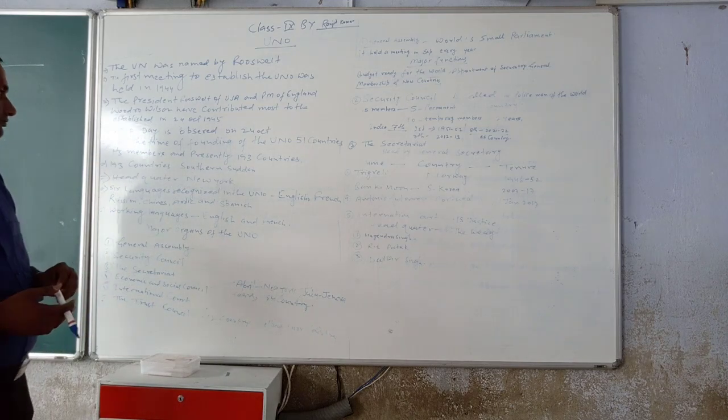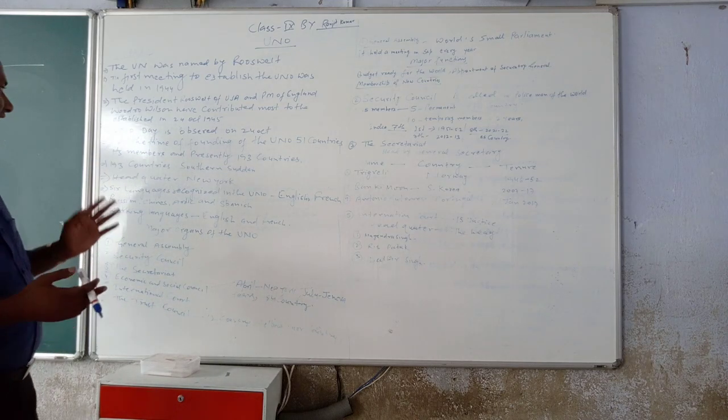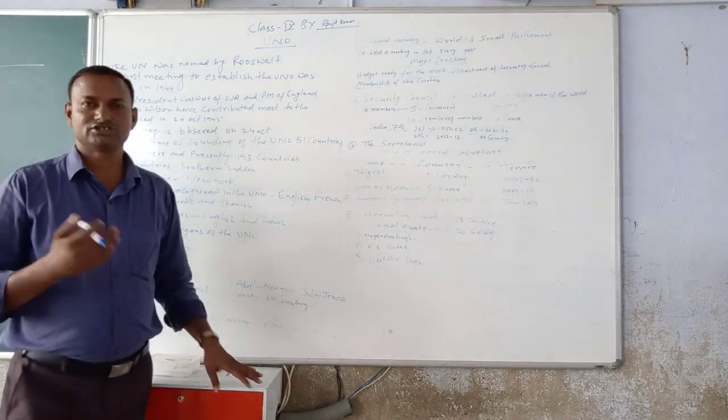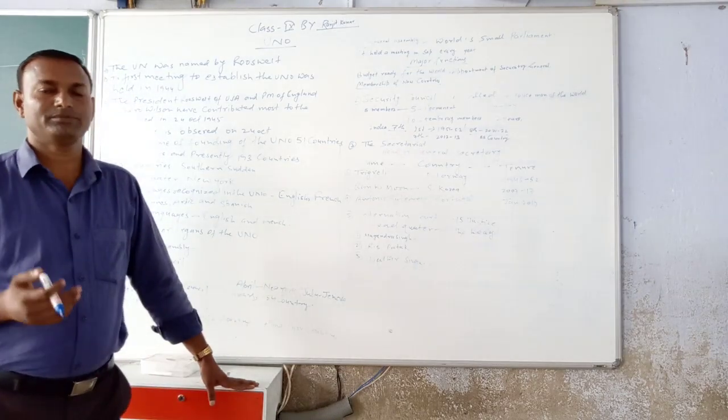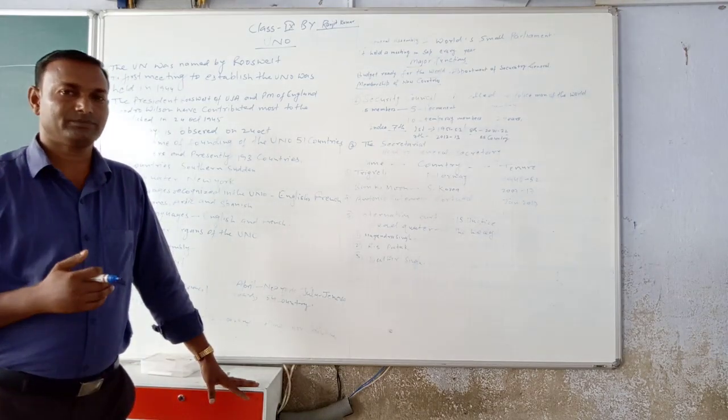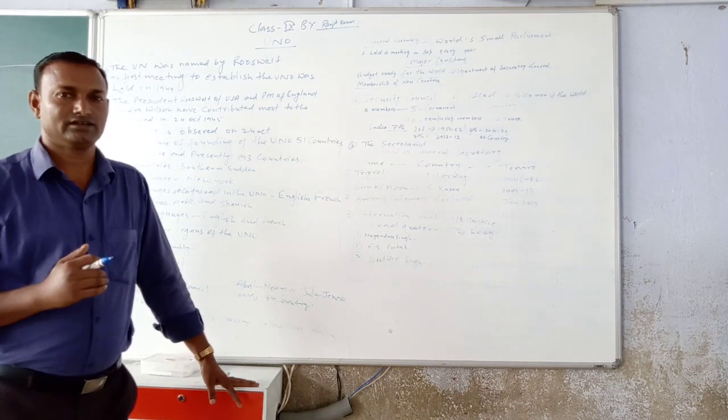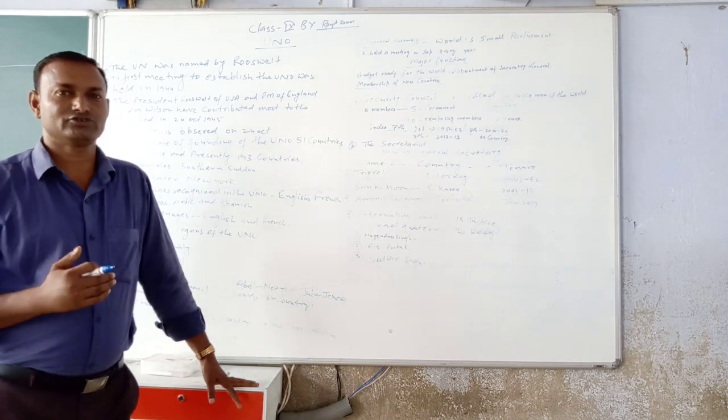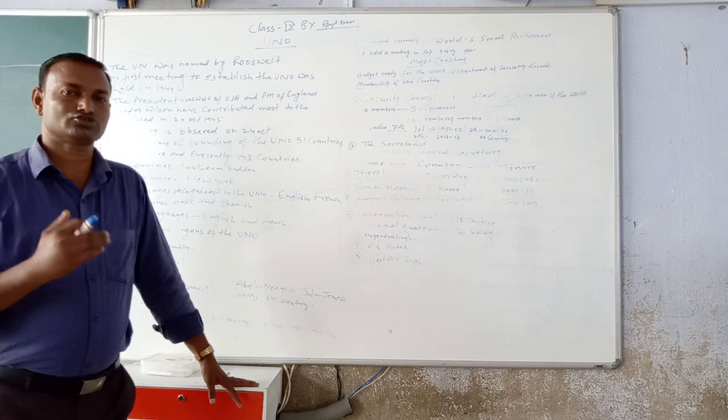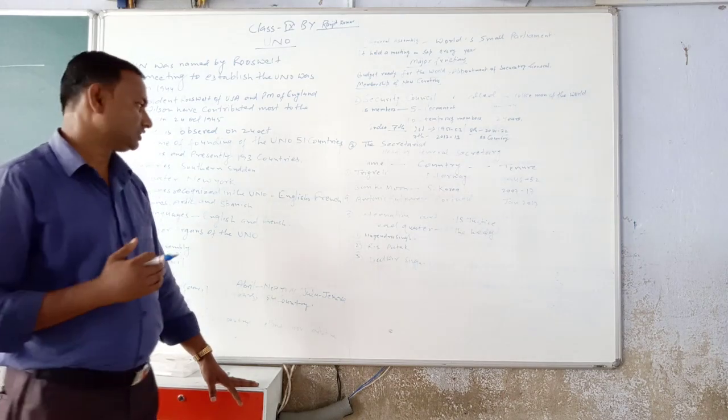At the present time, at the time of origin of the United Nation, just 51 countries. At the present time, we have 193 countries. The 193rd country, it is called South Sudan. This is the newest country.